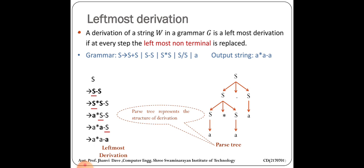So that is the structure of our leftmost derivation. S → S-S, then the first S is replaced by S*S, then S is replaced by a, and so on until all S's are replaced. When you read the parse tree from leftmost side: a*a-a — that is your output string. That completes leftmost derivation.